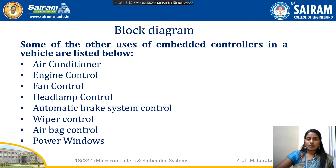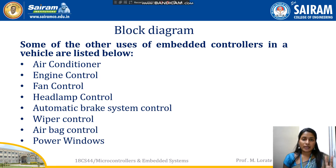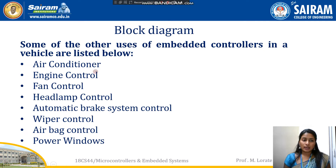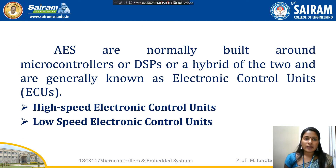One of the major and the first applications of embedded systems in the automotive industry was a microprocessor-based fuel injection system — that was the first embedded application in the automotive industry. Here are some more embedded control units which are normally used in vehicles: air conditioner, engine control, fan control, headlamp control, automatic brake system control, wiper control, airbag control, and power windows.